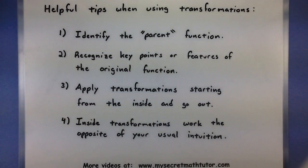Here are some helpful tips that you can think of when you start using these transformations. The very first thing that you want to do is just identify the parent function that's being used. This is because you want to identify some key features that it has or some key points on the original graph. Once you've done that, you can start applying these transformations one by one. Start with the transformations on the inside of the function and then slowly work your way out until you get to all of them.